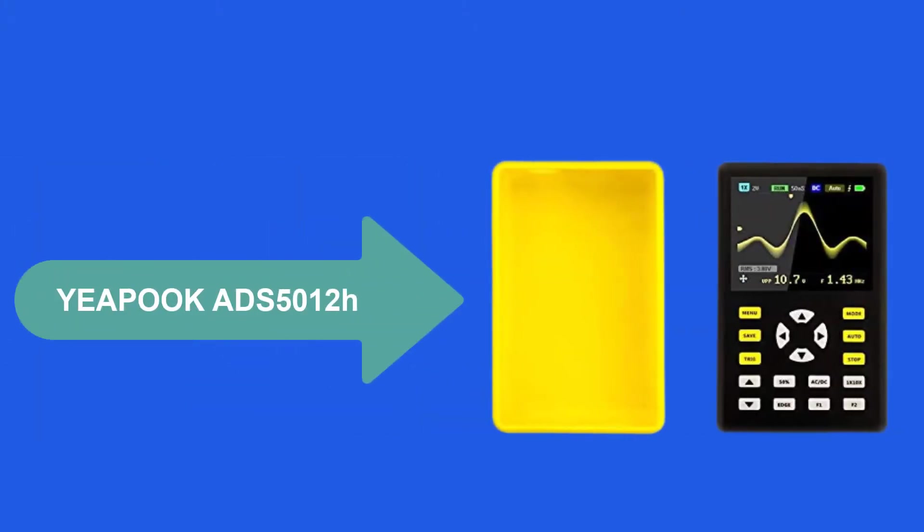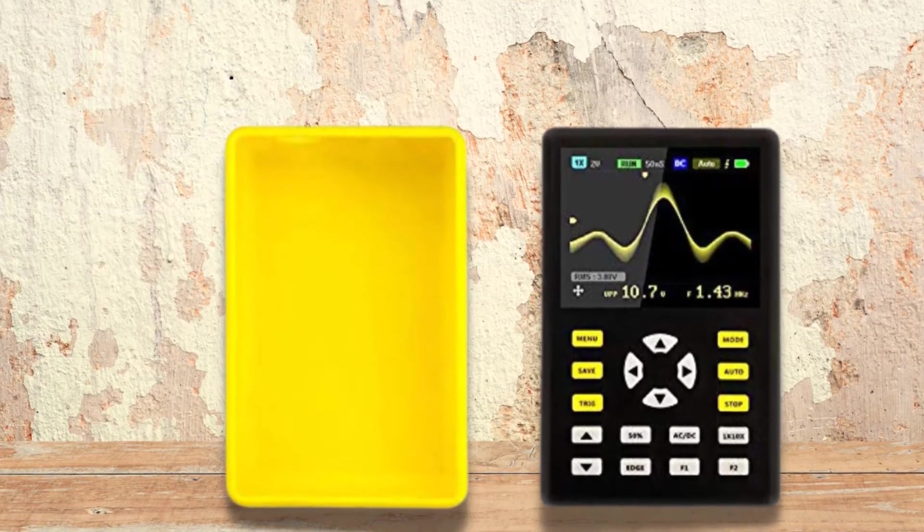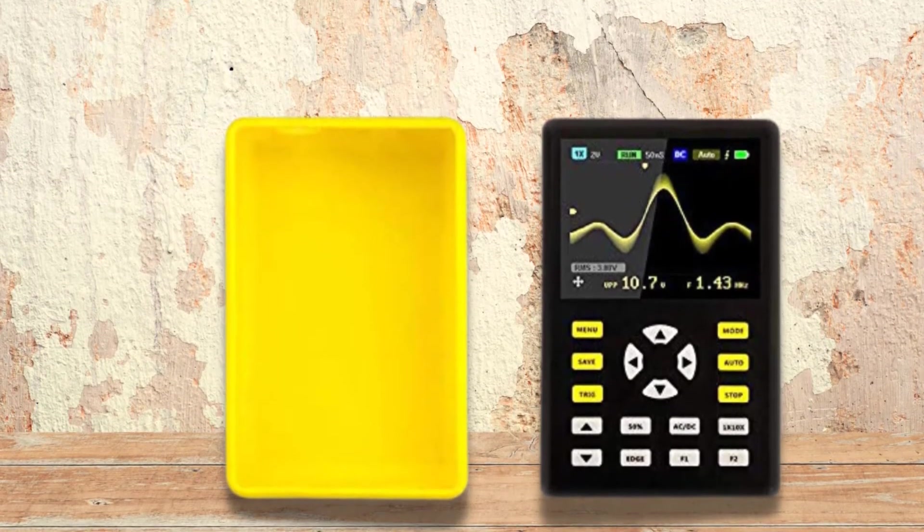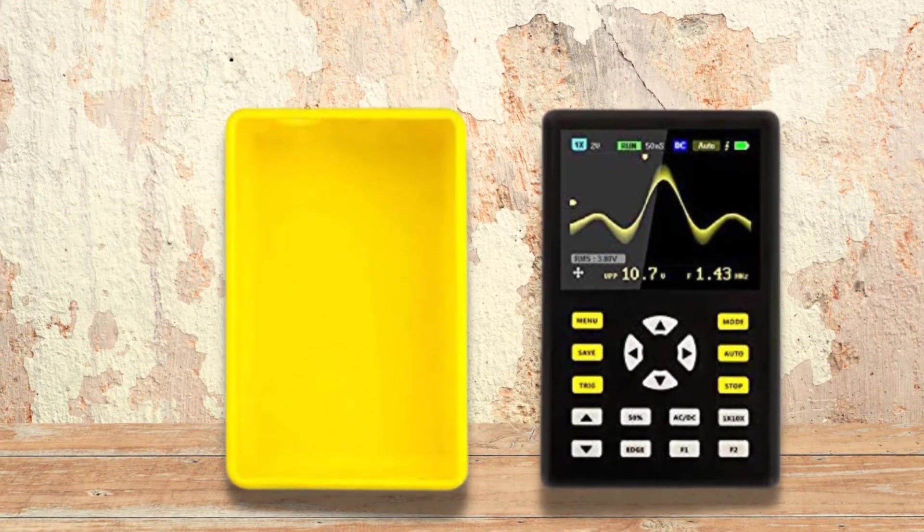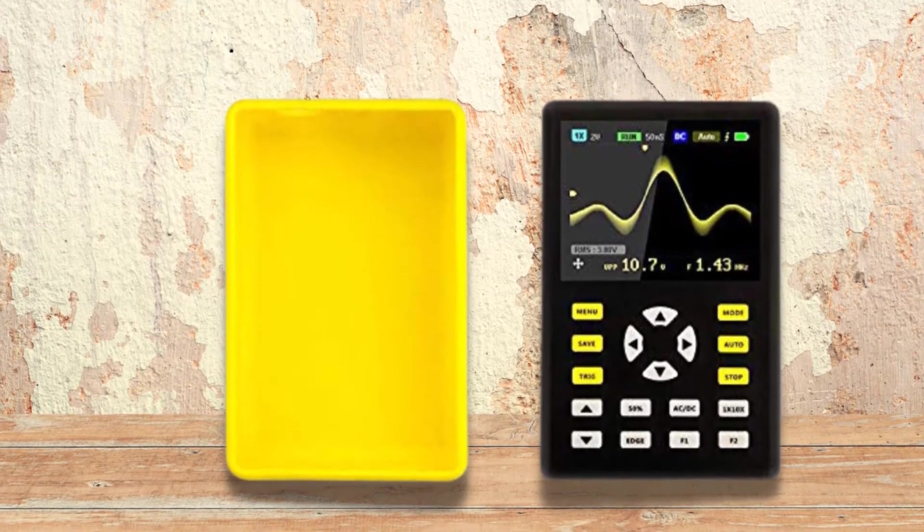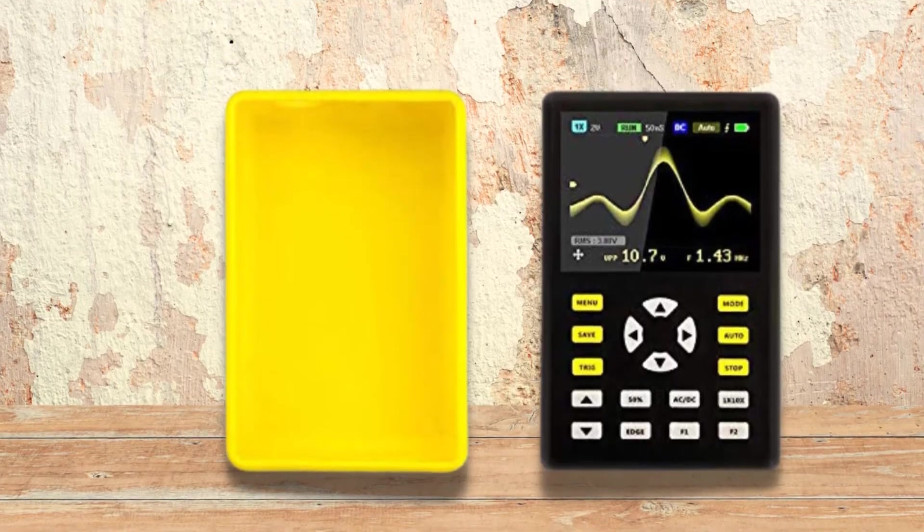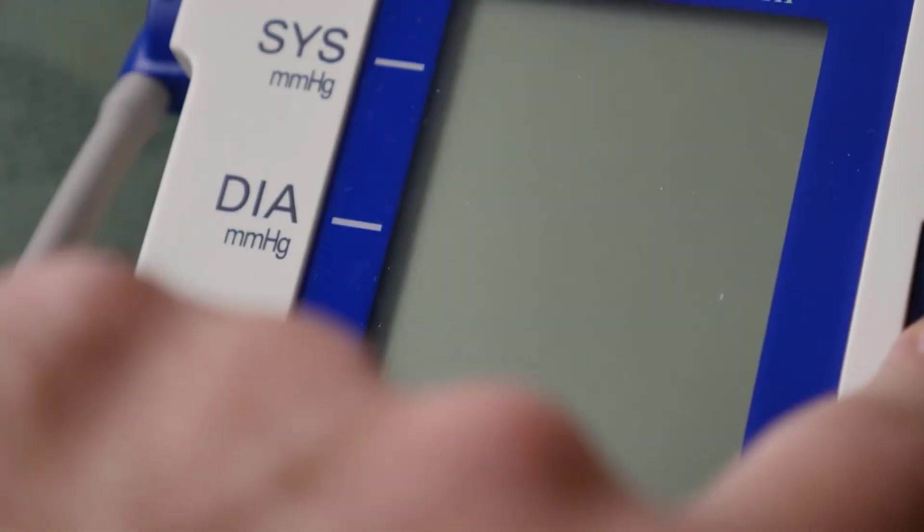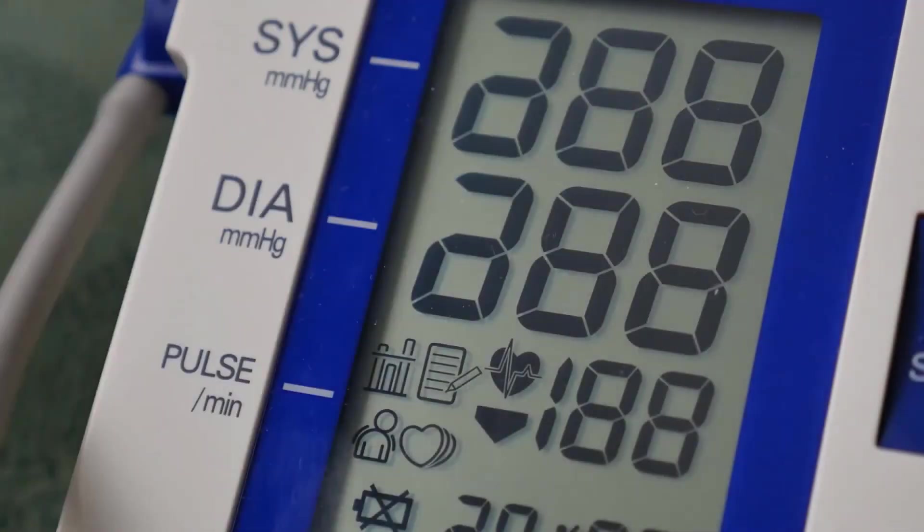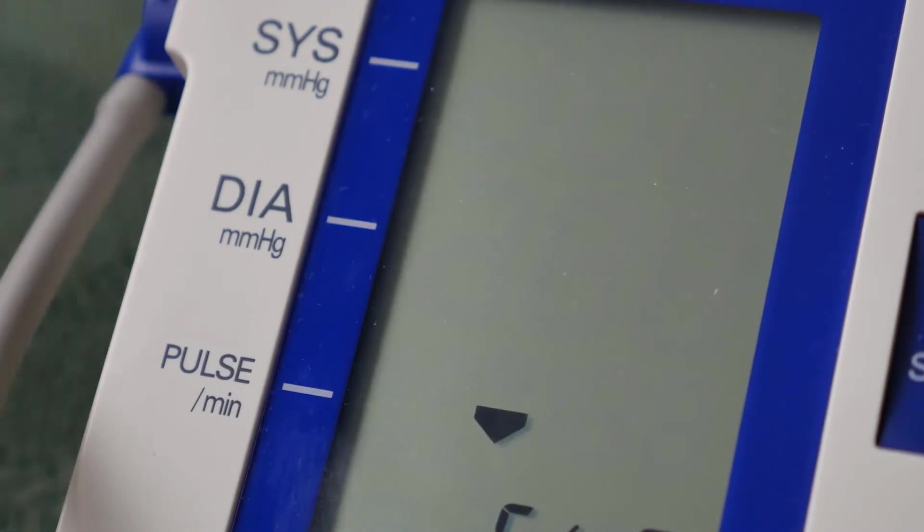At number 4, Yipuk ADS5012H. The Yipuk ADS5012H has a maximum input voltage of 80 V with a single probe and 800 V with 10 probes. It supports AC and DC coupling and supports both rising edge and falling edge trigger types. It has great sensitivity and can set auto-adjustment for amplitude and sweep speed, which makes it convenient to use.